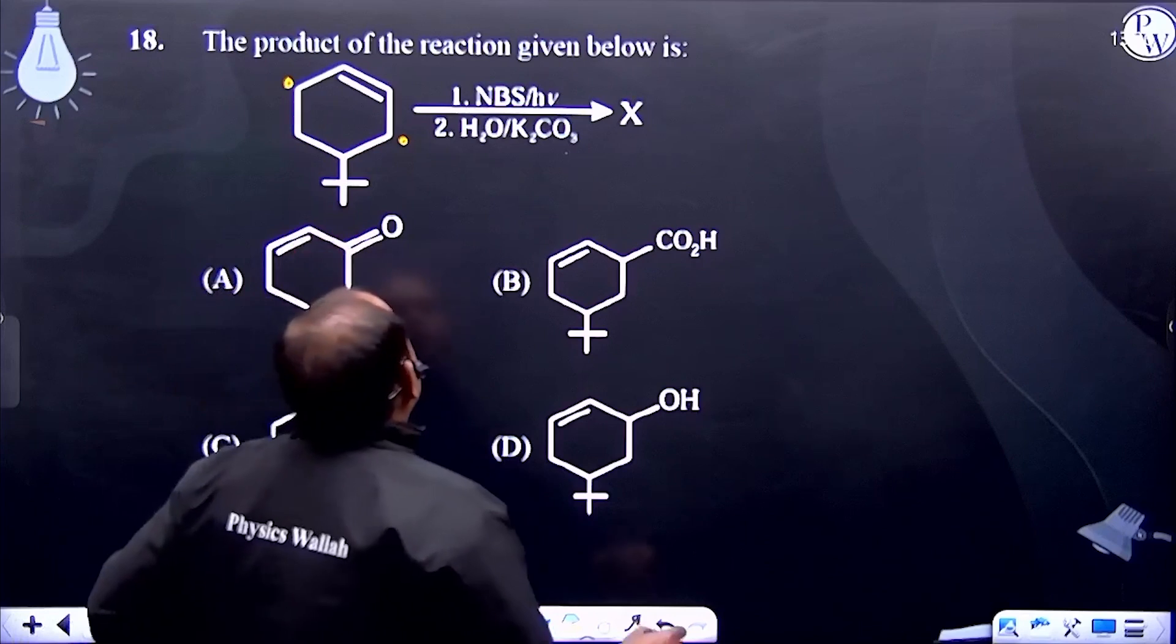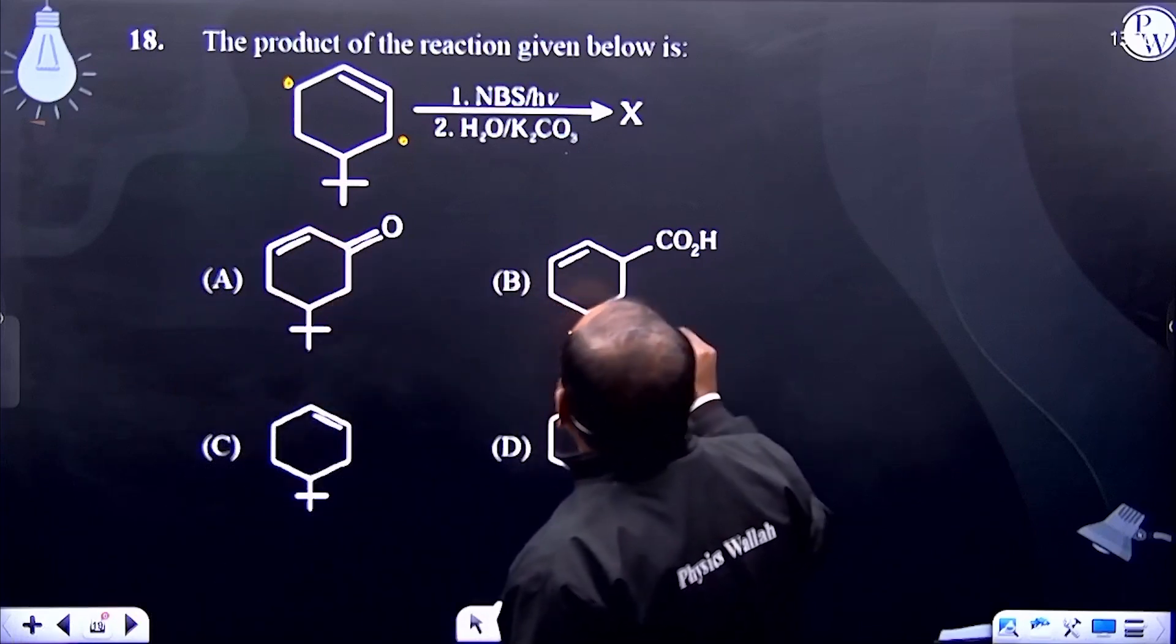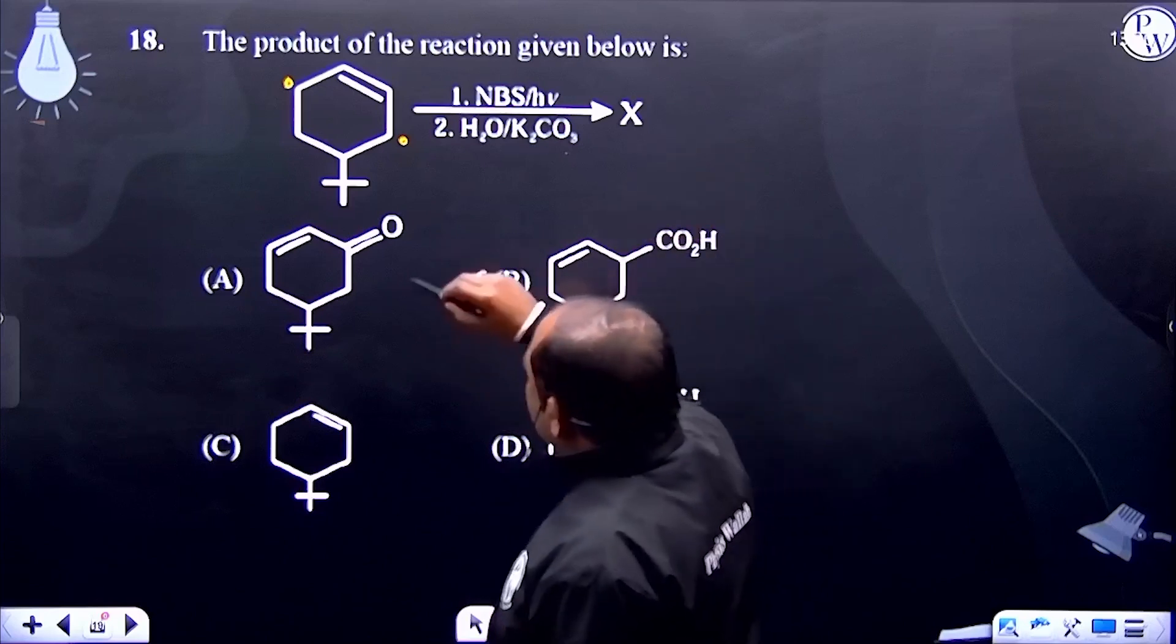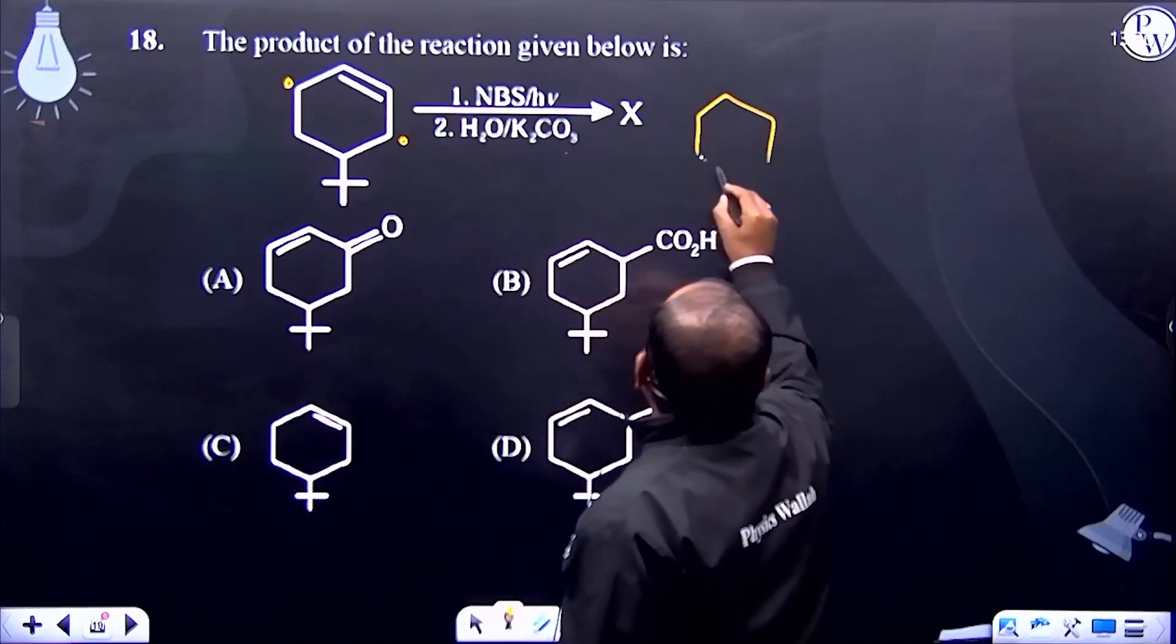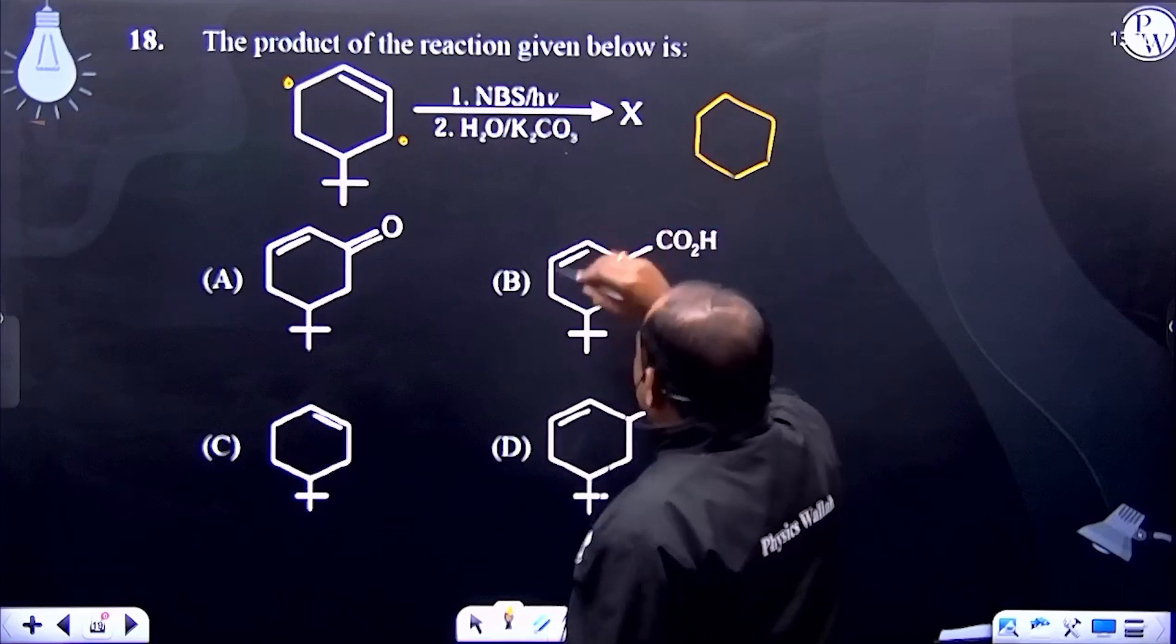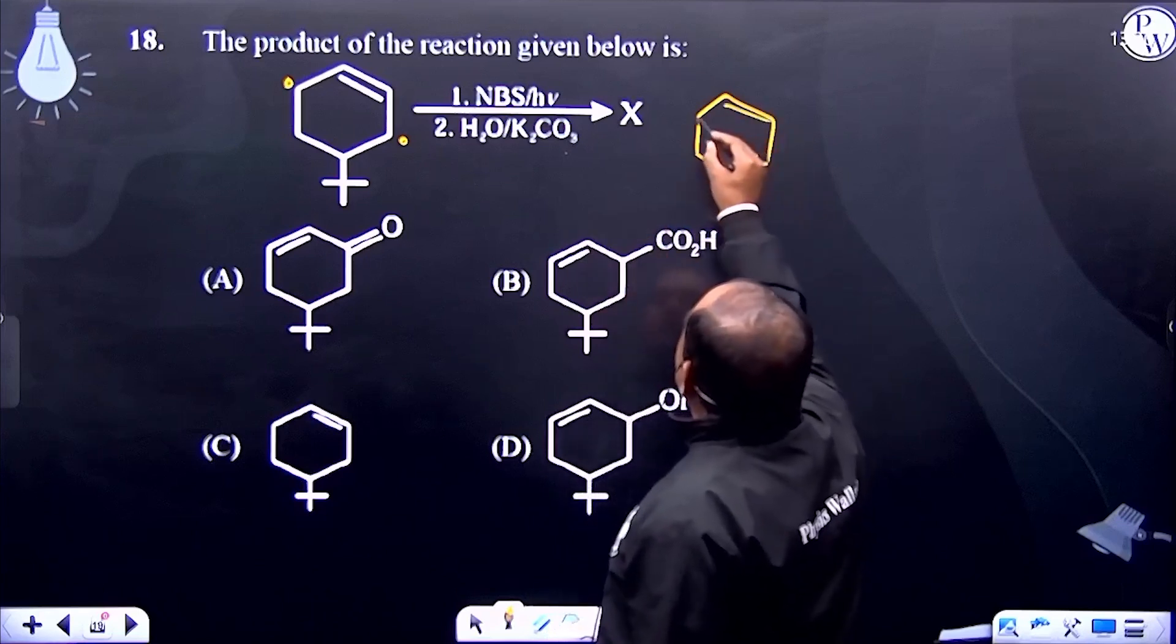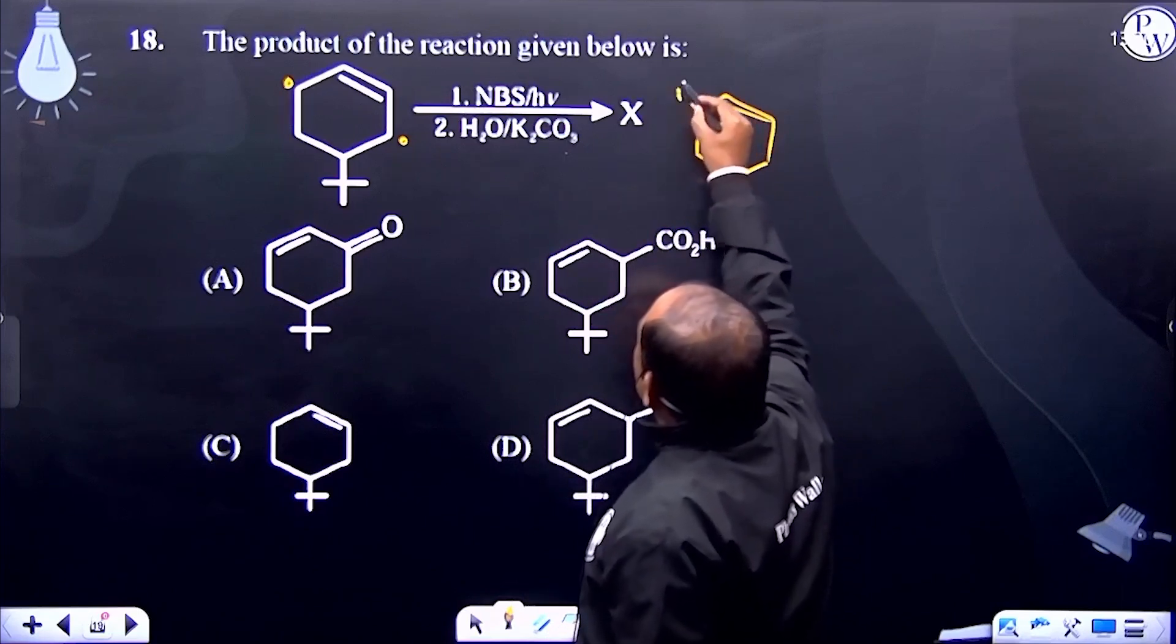So look here, if we take halogenation at allylic position. According to the options, if we go: halogenation, bromination.